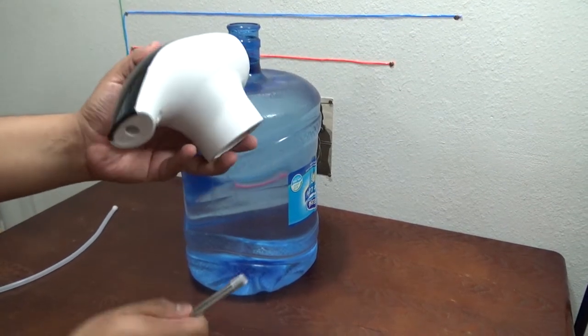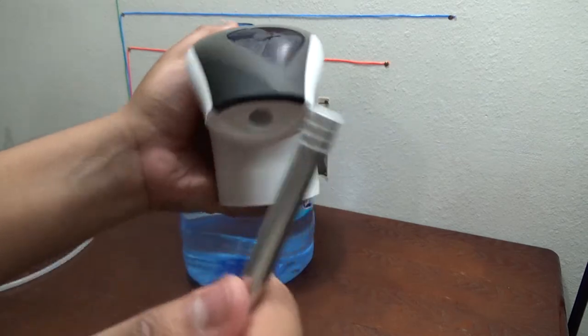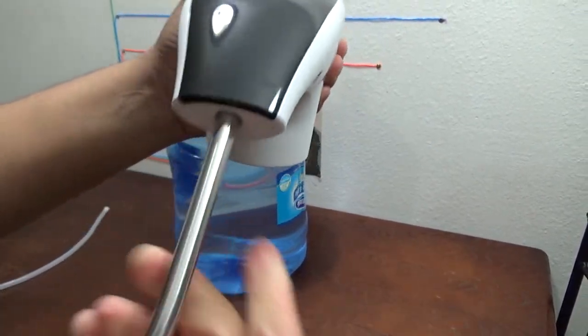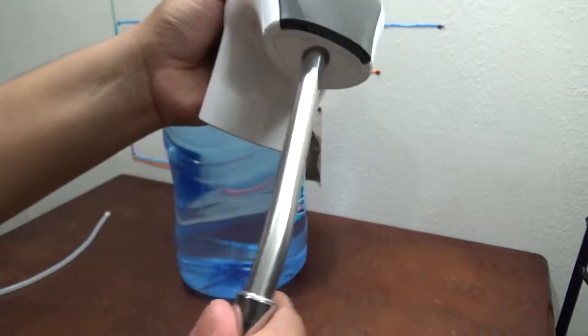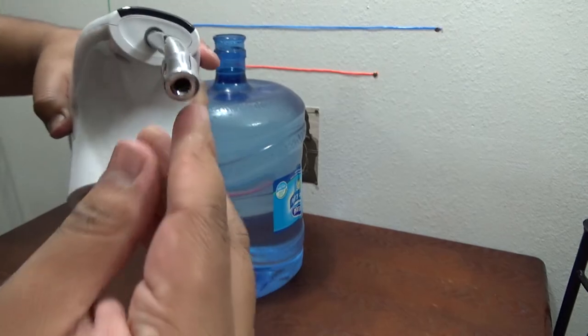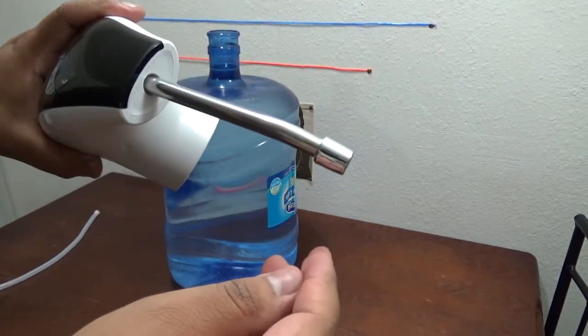So we're supposed to put this nozzle in here, the rubber side first. You just stick it in there, make it fit nice and snugly. And there you go, that's how it should look like.